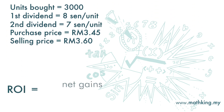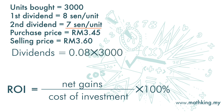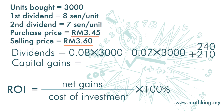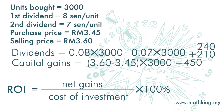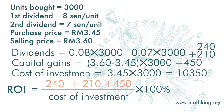Return on investment is net gains over cost of investment, times 100%. The returns are: dividends of 8 cents per unit times 3,000 units, and 7 cents per unit times 3,000 units. The capital gain is RM3.60 minus RM3.45, times 3,000 units. The cost of investment is RM3.45 times 3,000 units.